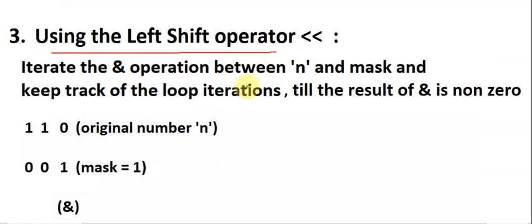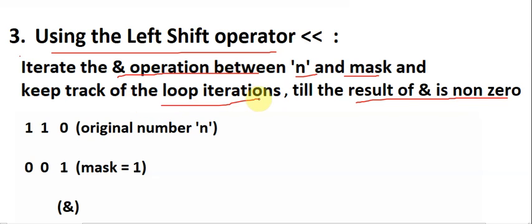The third method is using the left shift operator. The idea is simple: take a mask value of one and do the AND operation between number n and the mask until we find a non-zero result. We keep doing iterations, tracking the count in a variable, and the result is that tracked count of loop iterations done until we obtain a non-zero AND result.